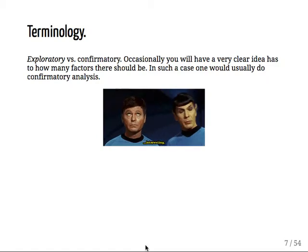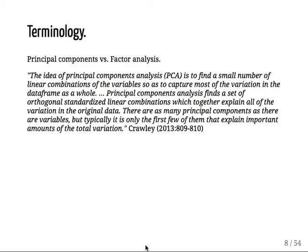So exploratory, the clue's in the name. It's exploratory, so it means you don't have strong hypotheses necessarily about how many factors you would find. Occasionally, you will have a very clear idea as to how many factors there should be, like big five, big six. And in such a case, you would usually do confirmatory factor analysis because you sort of know the structure you're looking for. I'm not sure if with Johannes, whether you did principal component analysis or factor analysis.